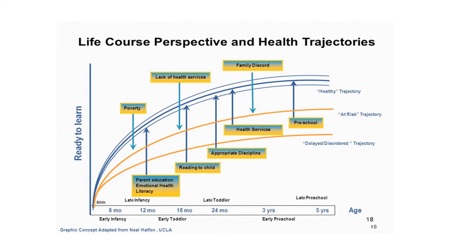This is a slide from Neil Halfon and mimics a growth chart. On the vertical axis there is readiness to learn and on the horizontal axis there is age. The top three blue lines represent the 5th, 50th and 95th centiles. The two lower orange lines describe the effect of neglect and below that delayed or disordered trajectory. The labels show the influence of determinants at different life stages ranging from poverty through to family discord. Children can also experience adverse childhood events at single points on their trajectories, for example the loss of a parent through death or divorce.